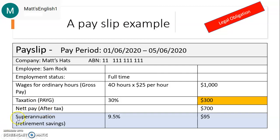Just a quick note: the word "net" can be spelt with a double T — that's the older way to spell it — or with one T. They both mean exactly the same thing.